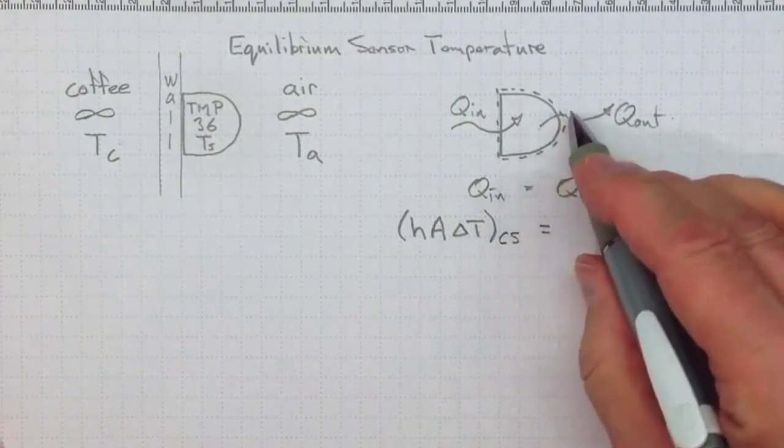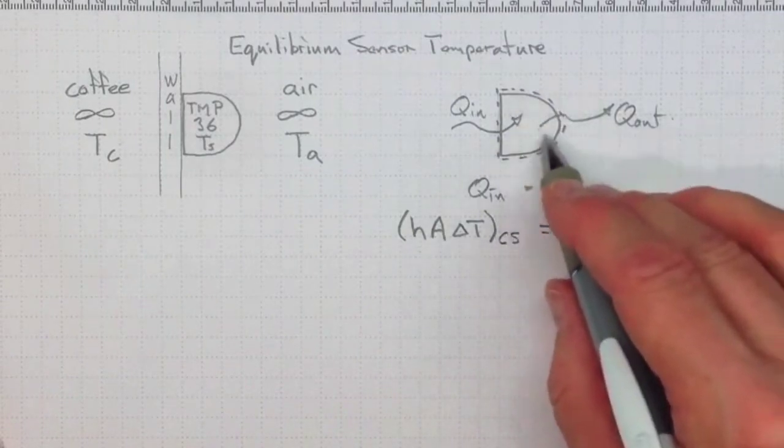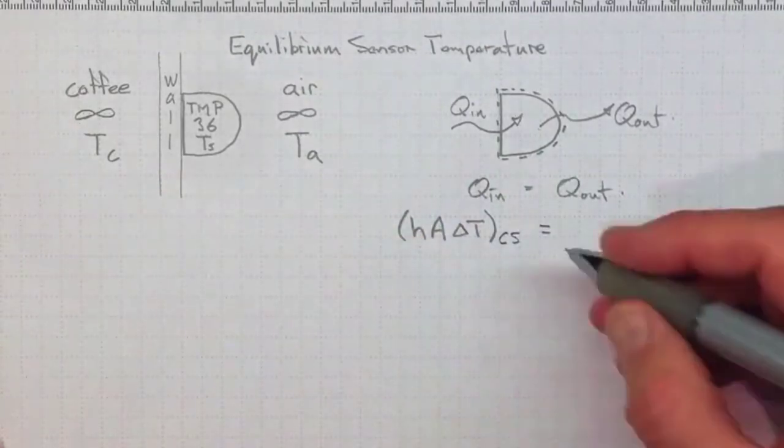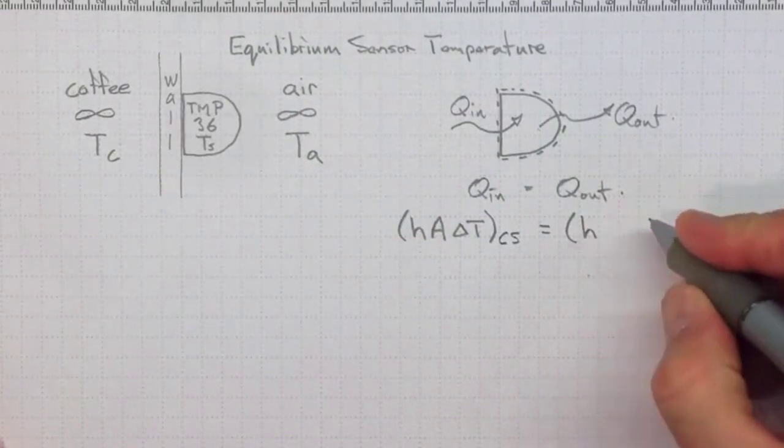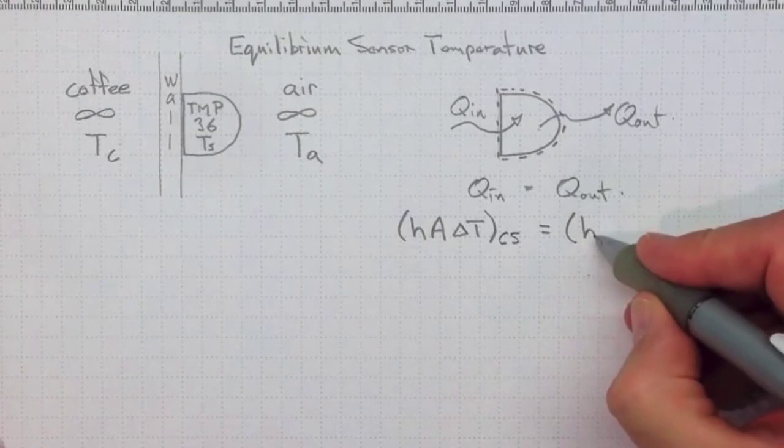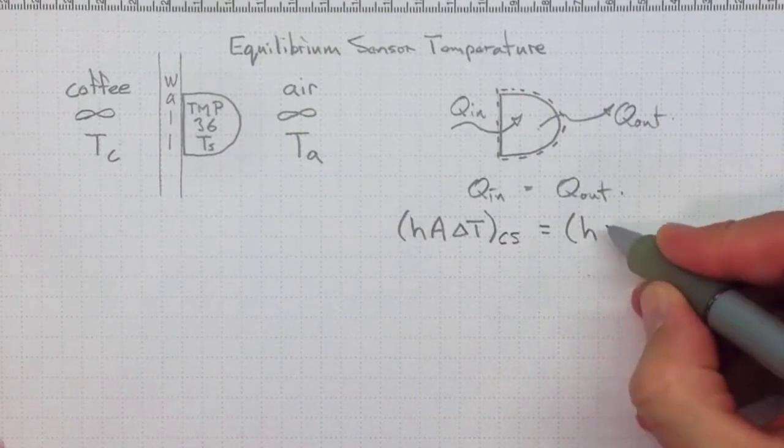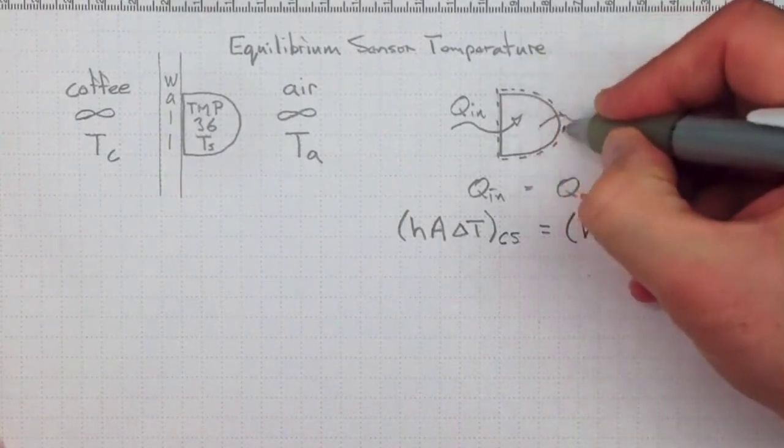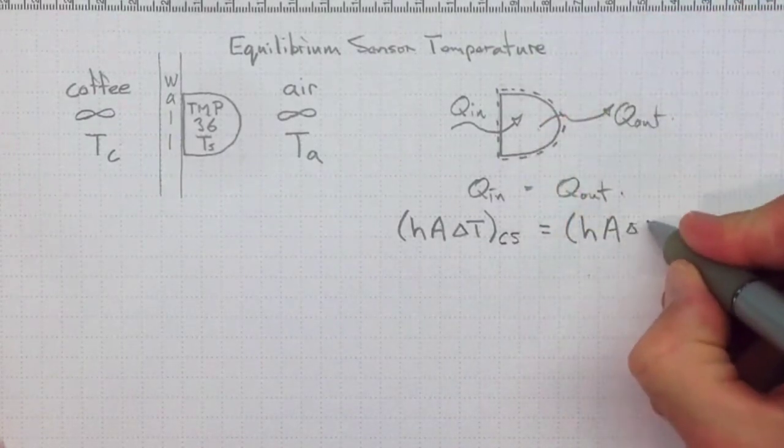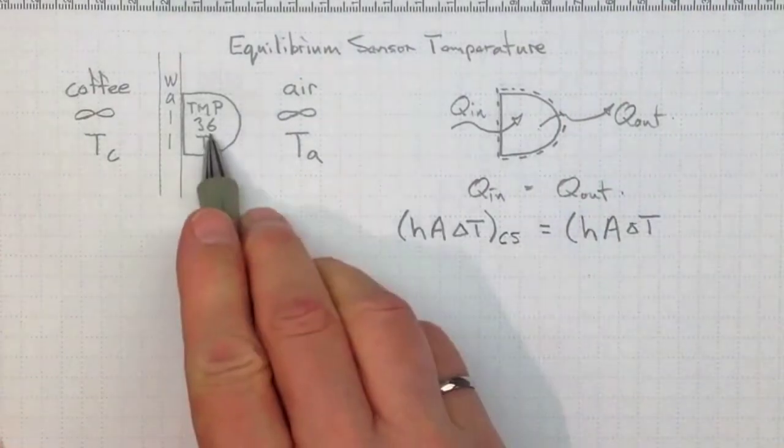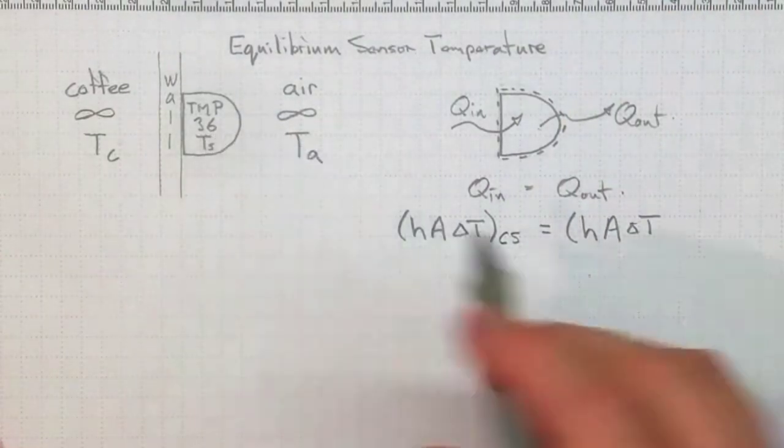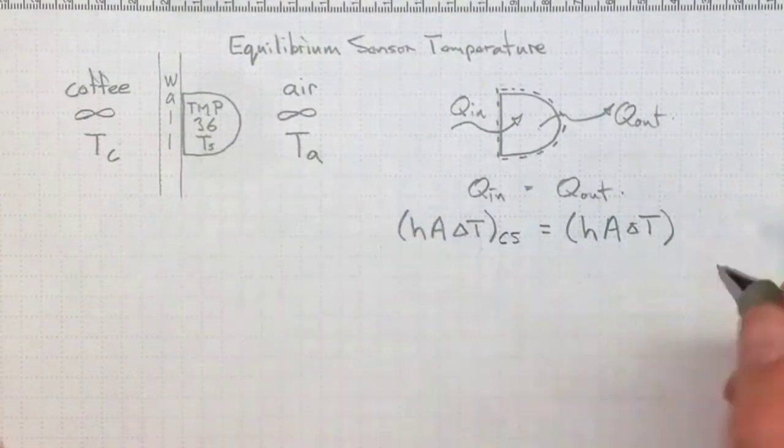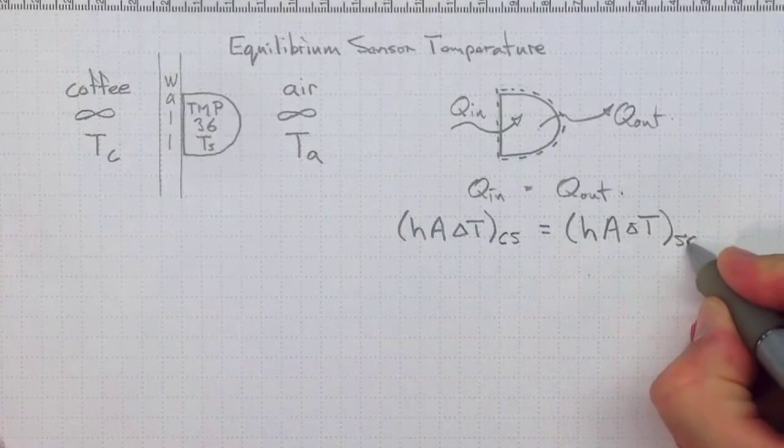The output, the h is going to be different because we've got air in contact with this surface out here, which is different from the wall of the coffee cup. But we'll still soak up all our lack of knowledge in this heat transfer coefficient that will depend on those circumstances. Area, this time the area in contact with the air. Delta T, this time the difference in temperature between the sensor temperature and the air temperature. And we'll make sure that we recognize that that's the interface between the sensor and the air by subscripting this SA.